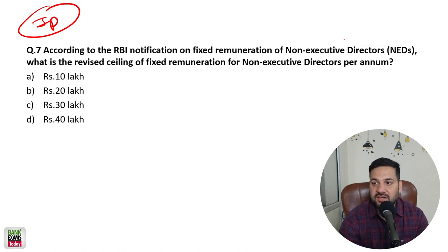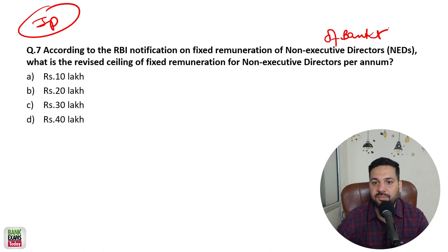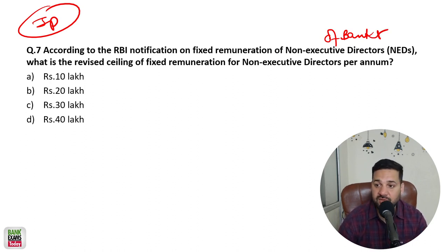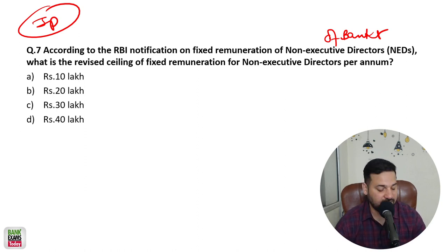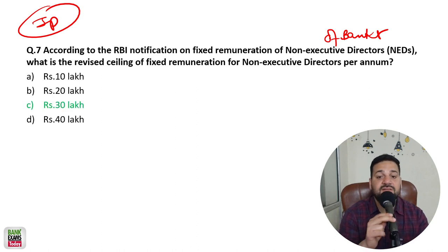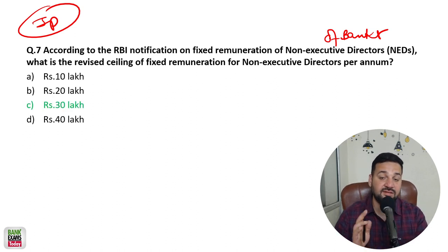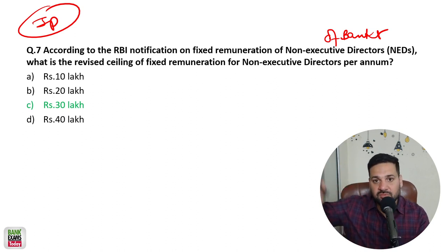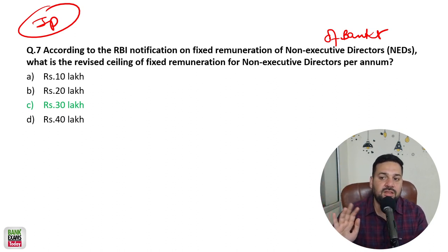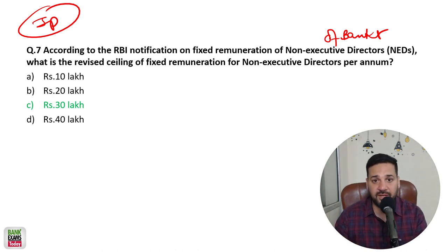This is really important: the revised ceiling for fixed remuneration of non-executive directors of banks. It used to be 20 lakhs per annum but now it is 30 lakhs per annum. It is not fixed — it is the maximum ceiling of 30 lakhs maximum fixed remuneration to the non-executive directors of the banks.